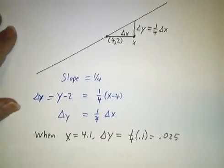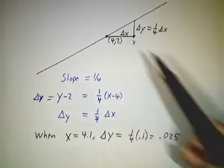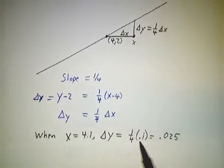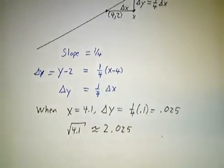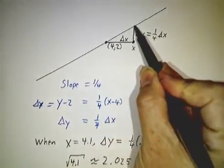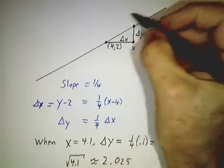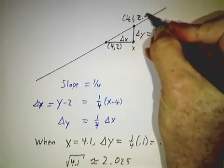So when x is 4.1, that means that delta x is 0.1, so delta y is ¼ of that. That's 0.025. So y must be 2.025. See here y was 2, we went up by 0.025. So this was the point 4.1, 2.025.